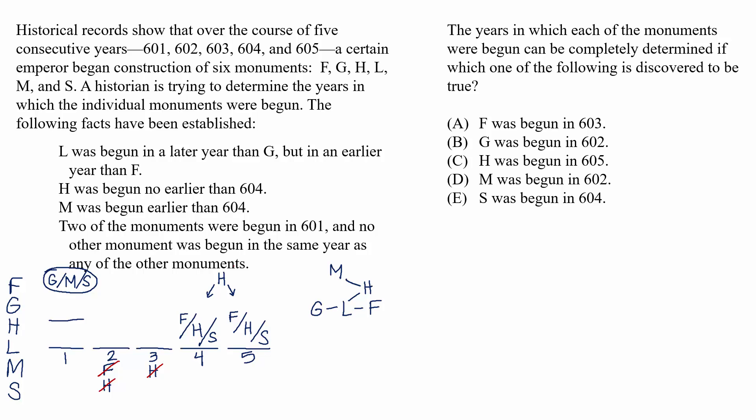This question asks, the years in which each of the monuments were begun can be completely determined if which one of the following is discovered to be true. So this question is essentially asking us for the choice that provides information that would allow us to know where every monument goes. Essentially, our diagram would be filled out completely.